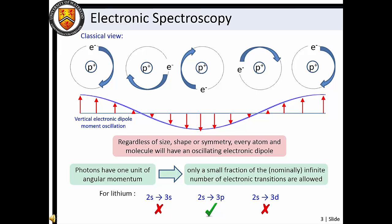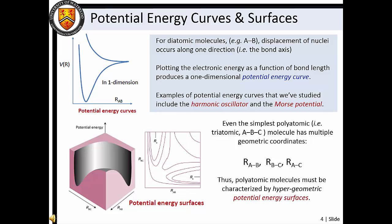Regardless of size, shape, or symmetry, every atom and molecule will have an oscillating electric dipole moment and will therefore have the potential to undergo electronic transition. We saw in Masterclasses 3 and 4 that there are an infinite number of electronic states that converge to the ionization energy limit for atoms. The same is true for molecules. Fortunately, owing to the transition selection rules arising from conservation of momentum and symmetry arguments, only a small fraction of the infinite number of possible transitions are allowed.